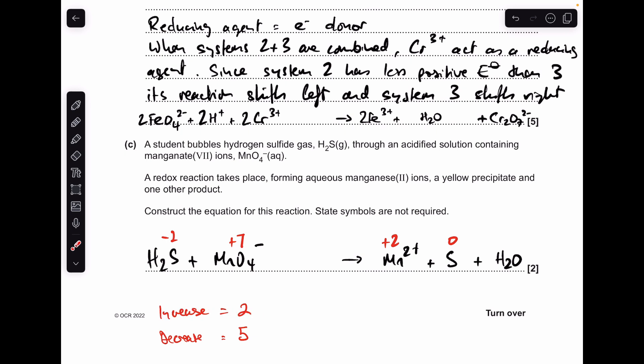We need these to be the same - the total change needs to be the same. If we times the sulfur species by 5 that'll give us a change of 10, and the manganese species by 2 that'll give us a change of 10 for them. Next thing we need to do is sort out the overall charge left and right. We've got 2 minus on the left and 4 plus on the right, so we need to put some H+ ions in to bring 2 minus up to 4 plus. That means we need 6 H+ on the left.